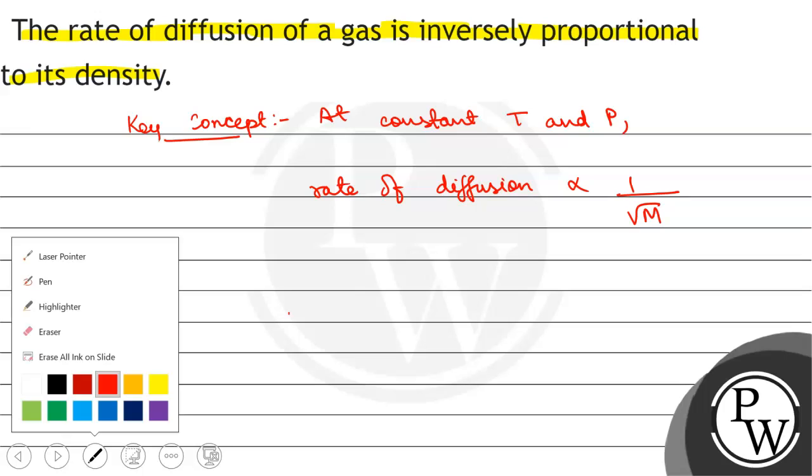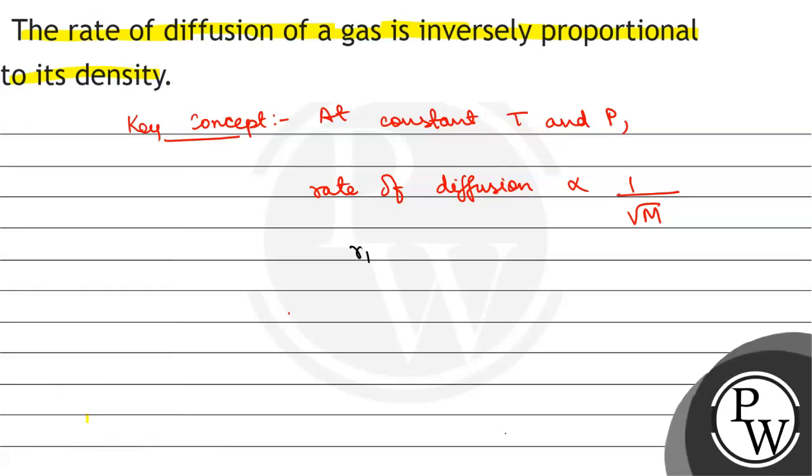So, R1 by R2 equals square root of M2 by M1, which equals square root of D2 by D1, because density is directly proportional to mass.